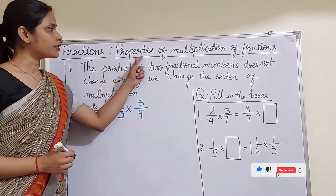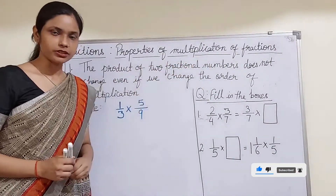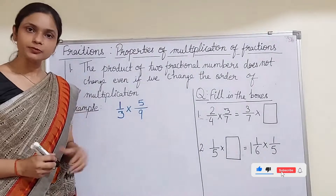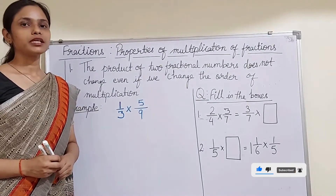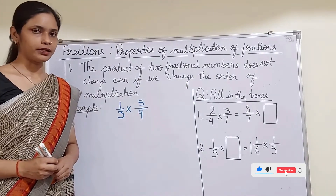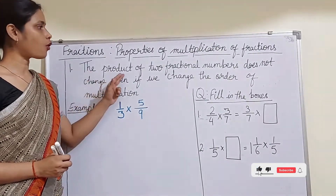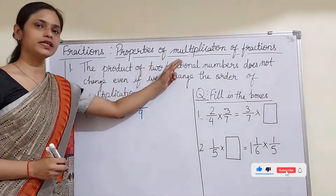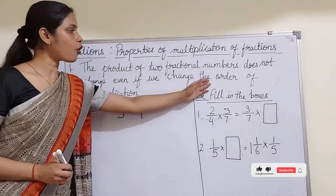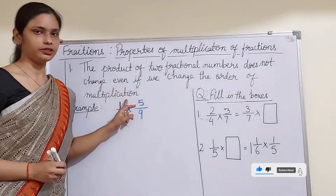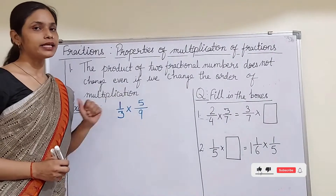We will study about the properties of multiplication of fractions. There are various properties of multiplication, so we will study all the properties one by one. The very first property states that the product of two fractional numbers does not change even if we change the order of multiplication. Let us understand this through an example.